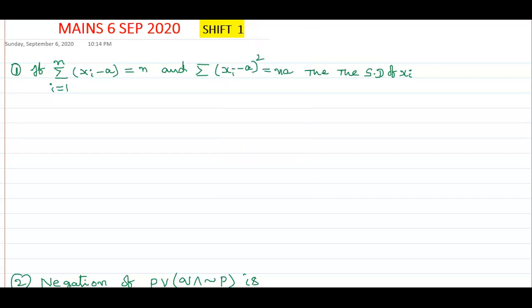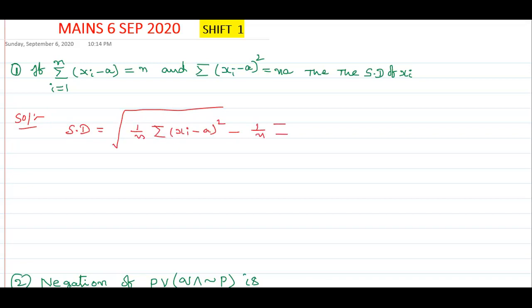See the first question, what they are given. If sigma i equals 1 to n, (xi minus a) equals n, and sigma (xi minus a) whole square equals n. Find the standard deviation. The standard deviation formula is: standard deviation equals under root of 1 by n times sigma (xi minus a) whole square, minus 1 by n times sigma (xi minus a), whole square.